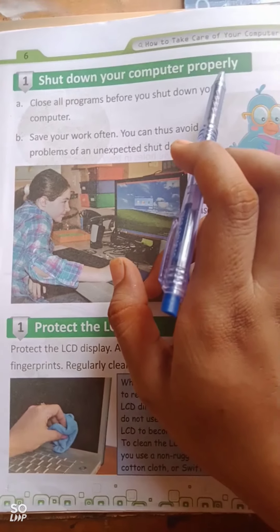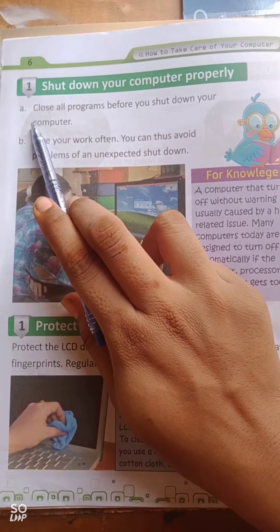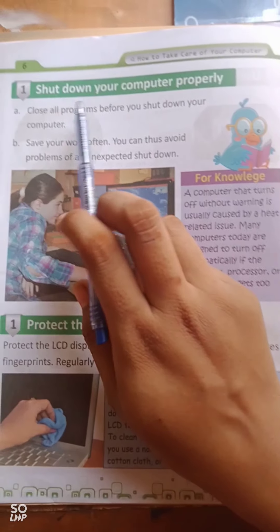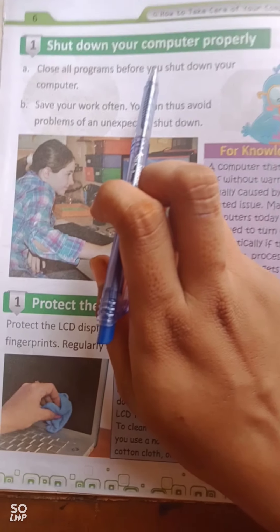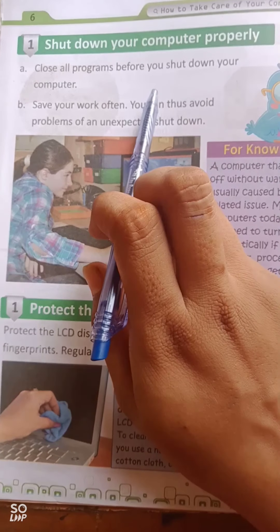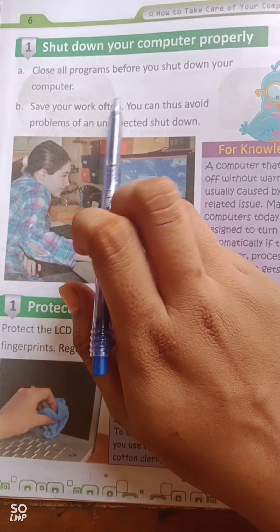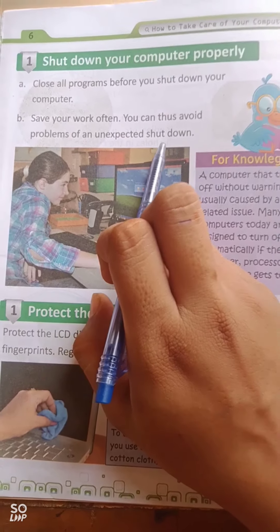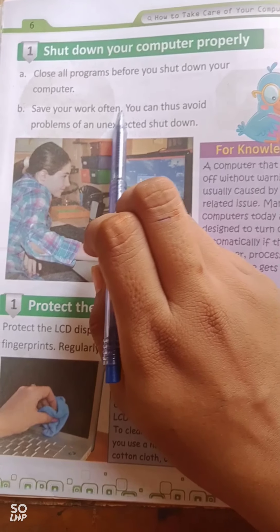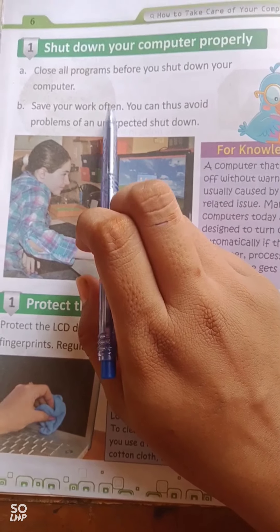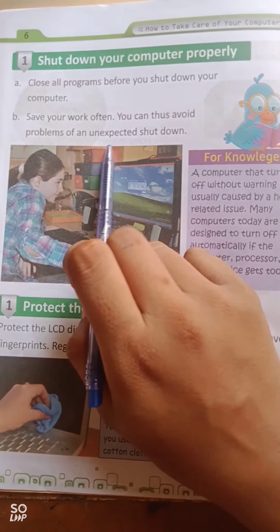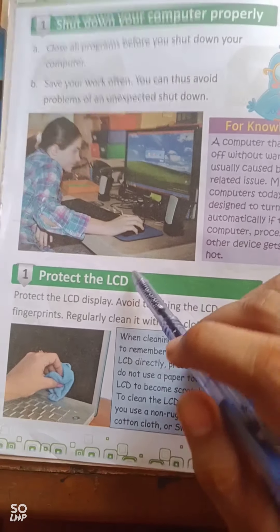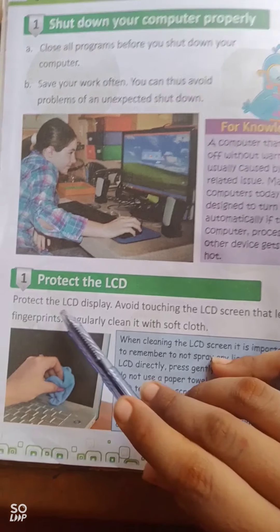Shut down your computer properly. Number one: Close all programs before you shut down. Number two: Save your work often — you can thus avoid problems of an unexpected shutdown. Ap jo bhi programs use kar rahe the, unhe pehle band karein. Apna kaam jaldi jaldi save kar liya karein taake computer achanak band na ho jaaye.